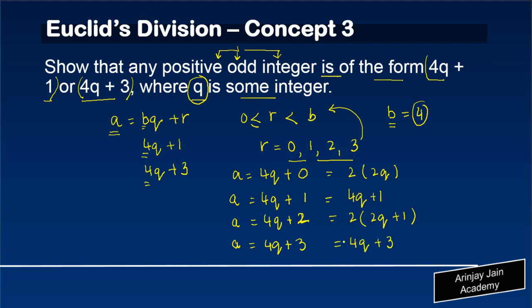Now, you must be wondering, why am I doing this? We have to show that any positive odd integer is of the form 4q plus 1 or 4q plus 3. When we say it's odd, if any number can be multiplied by 2, or it can be shown to be a multiple of 2, it cannot be odd.